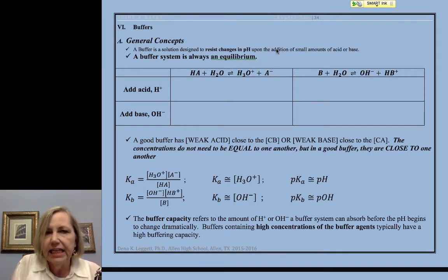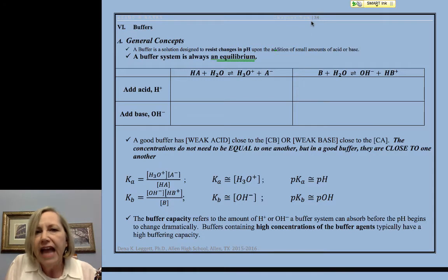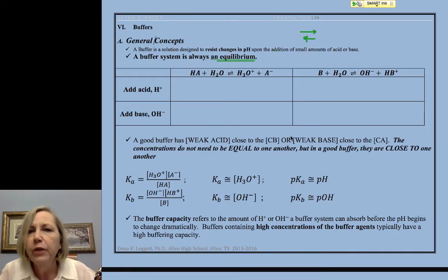The first thing is key. What we have to have to be a buffer system is we have to have an equilibrium. We have to have the ability to go both forward and backwards if we want to respond to that addition of small amounts of acids and bases.